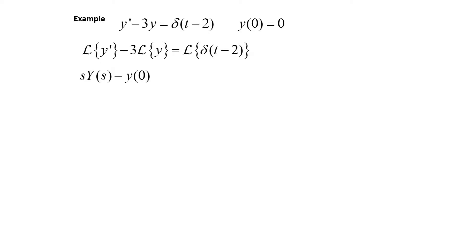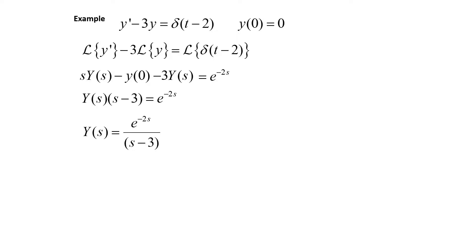That gives us s times Y(s) minus y(0), minus 3 times Y(s), which equals e to the negative 2s. We know the initial condition is y(0) equals 0, so that middle term goes away. We can factor out Y(s) to get Y(s) times s minus 3 equals e to the negative 2s. To get Y(s) by itself, we divide by s minus 3, so Y(s) equals e to the negative 2s over s minus 3.